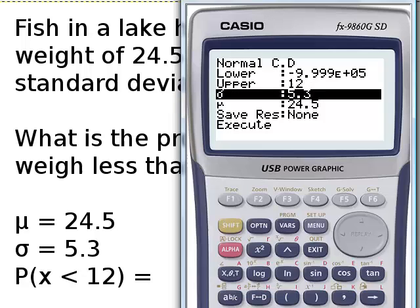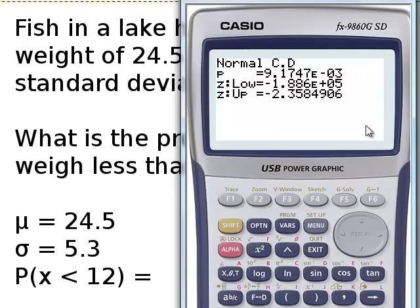And our sigma and mean have stayed the same. And our probability is given here: 9.1747.